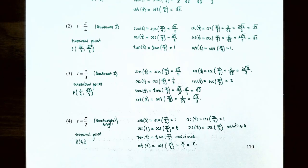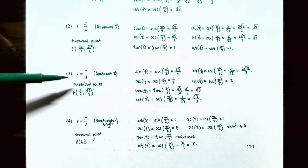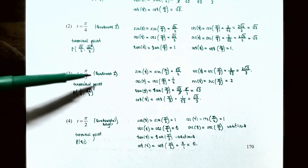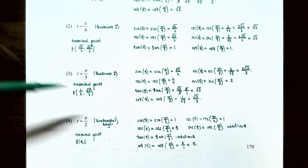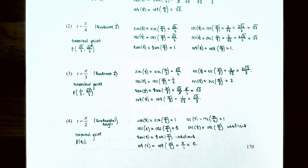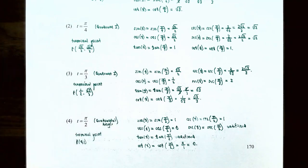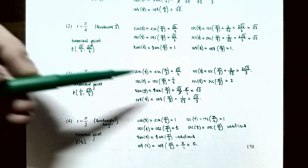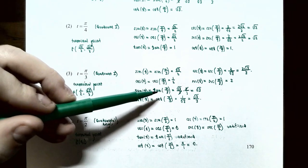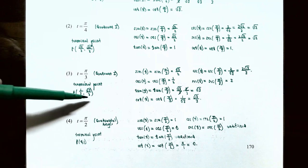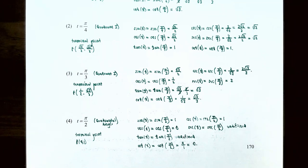For T equals pi over 3, or 60 degrees, also in quadrant 1, the terminal point is (1/2, √3/2). Sine of pi over 3 is √3/2. Cosine of pi over 3 is 1/2. Tangent of pi over 3 is y divided by x: (√3/2) ÷ (1/2) = √3. Cosecant of pi over 3 is the reciprocal of y: 2/√3, which rationalizes to 2√3/3.